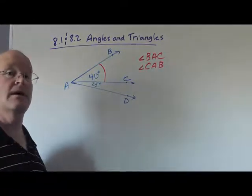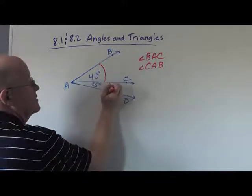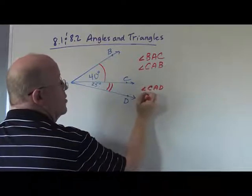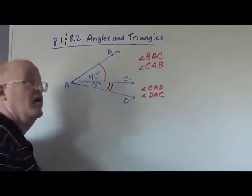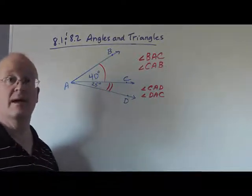Notice how the middle letter is the vertex A. Likewise this 25 degree angle could be called angle CAD or angle DAC. We could not refer to it as angle A because there are actually three angle A's.